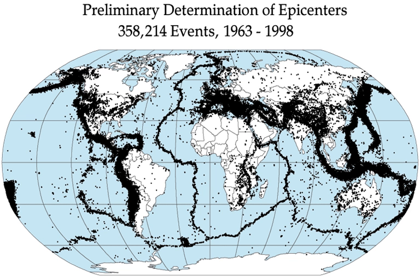One of the most devastating earthquakes in recorded history was the 1556 Shaanxi earthquake, which occurred on 23 January 1556 in Shaanxi Province, China. More than 830,000 people died. The 1976 Tangshan earthquake, which killed between 240,000 and 655,000 people, was the deadliest of the 20th century. The 1960 Chilean earthquake is the largest earthquake measured on a seismograph, reaching 9.5 magnitude on 22 May 1960, with its epicenter near Cañete, Chile.